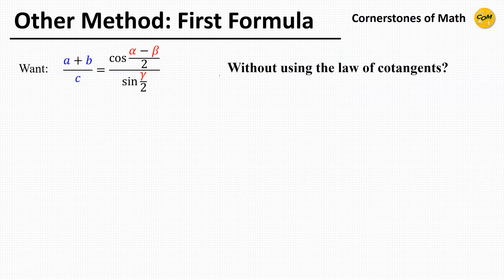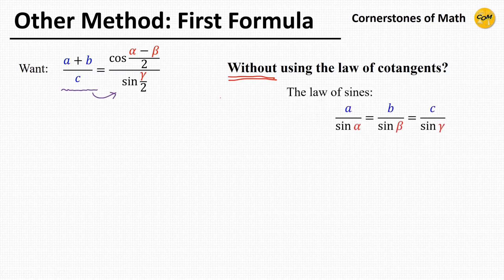Now, some of you might wonder: do we really need the law of cotangents to prove this? Can we solve this problem without using the law of cotangents? Well, of course we can, and I actually prefer this method over the previous one. I will start from the left-hand side this time and derive the right-hand side. First, we apply the law of sines, which lets us change the ratio of lengths into the ratio of sines of angles, giving (sine alpha plus sine beta) divided by sine gamma.